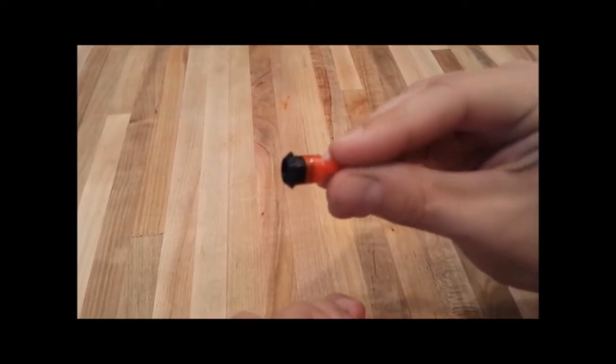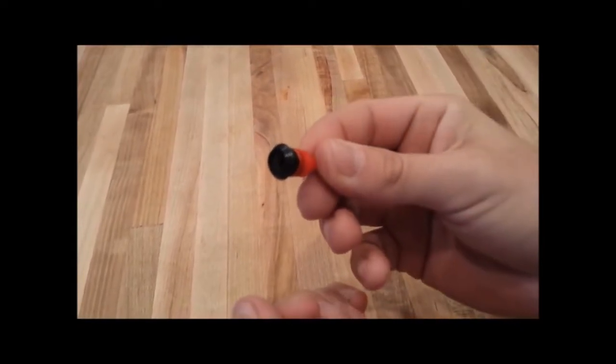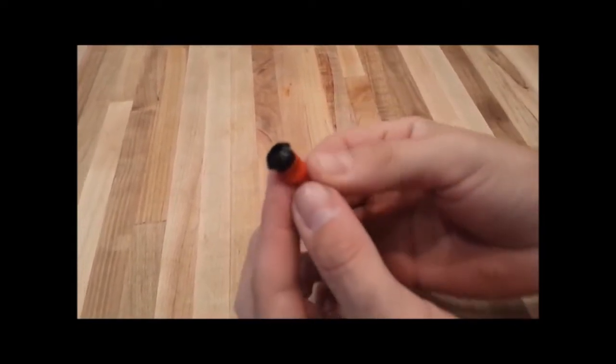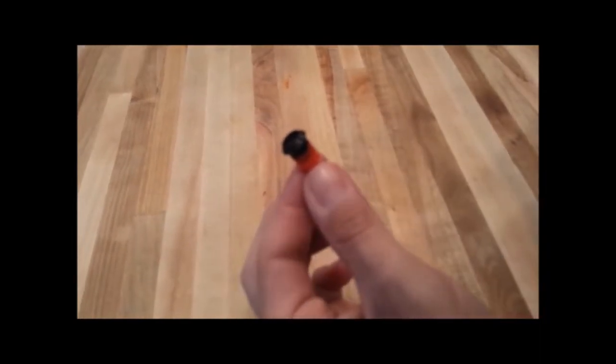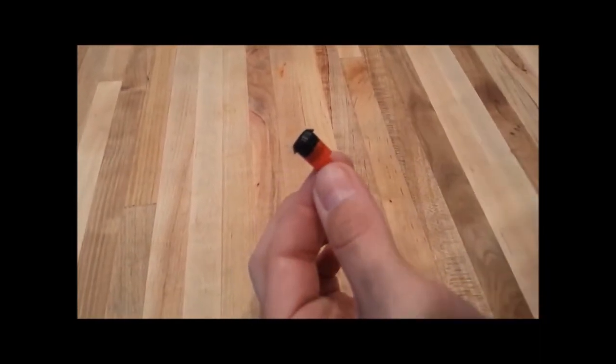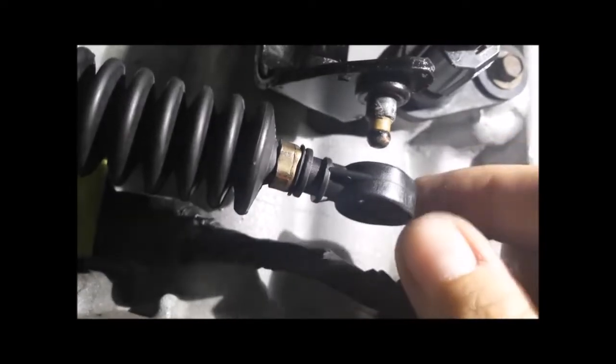After you remove all of the old bushing, if there's any left, from the transmission cable, it should look like this.